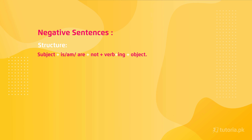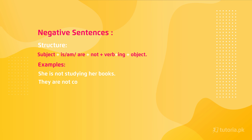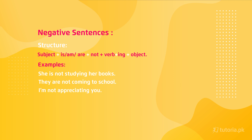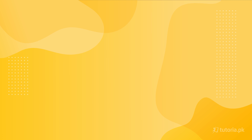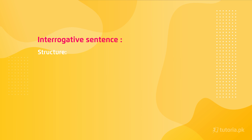Now coming towards the negative sentences — how do we form negative sentences. The structure is: Subject + is/am/are + not + present participle + object. For example: 'She is not studying her books.' 'They are not coming to school.' 'I am not appreciating you.' 'She is not laughing.' 'You are not eating your meal.' All of these sentences belong to present continuous negative sentences.